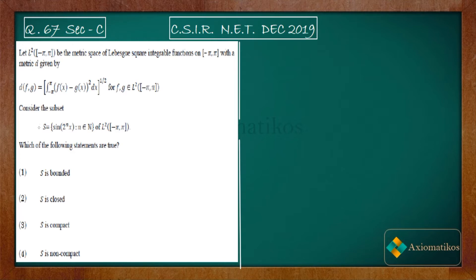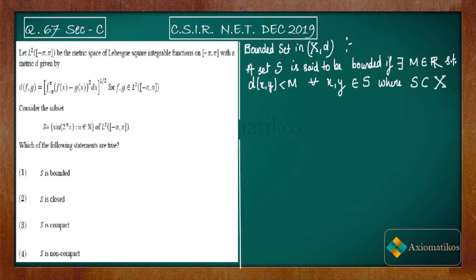Now we have to show the set is bounded. To show a set is bounded, we must understand its definition. A set S in a metric space (X, D) is said to be bounded if there exists M ∈ ℝ such that D(x, y) < M for all x, y belonging to S. So if the distance between any two elements of S is less than some fixed real number M, we call that set bounded.